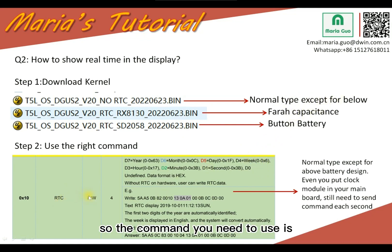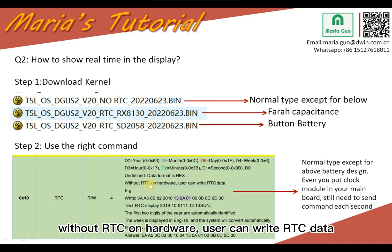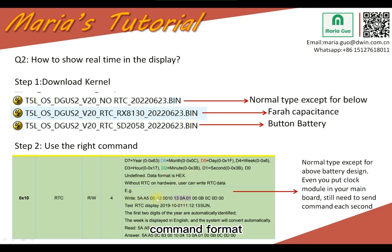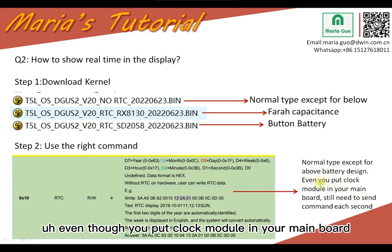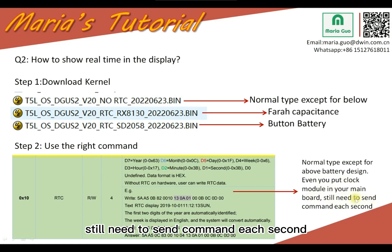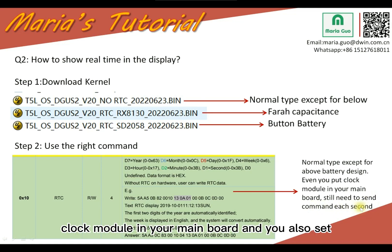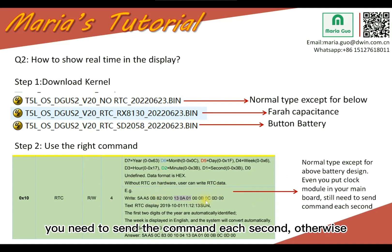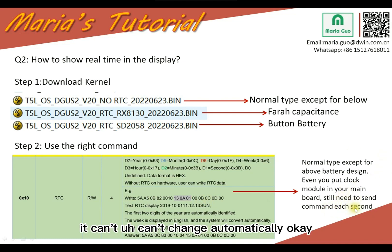For the first situation — the normal type without hardware RTC — the command you need to use is 0x10. Without RTC on hardware, the user can write RTC later. This is the command format. Even though you put the clock module in your main board and set the RTC display in the project, you still need to send this command each second, otherwise it can't change automatically.